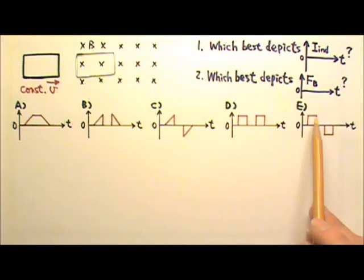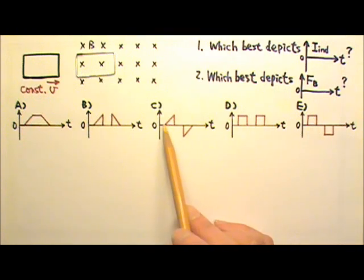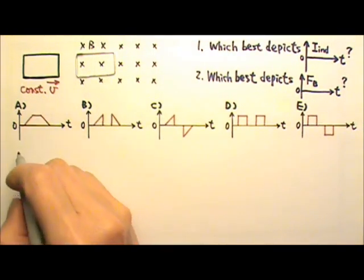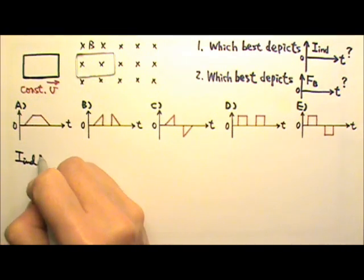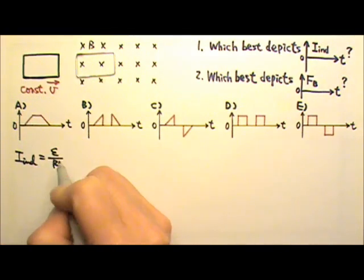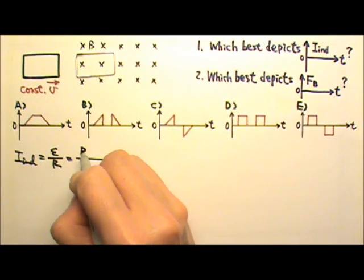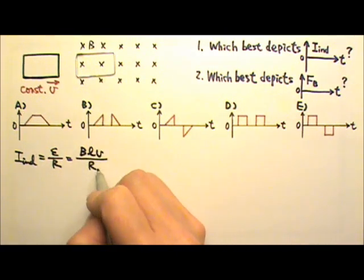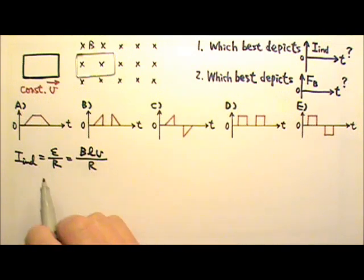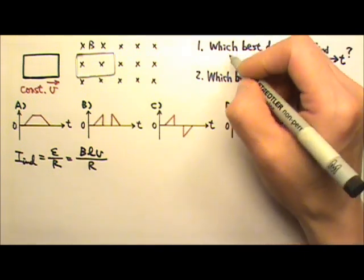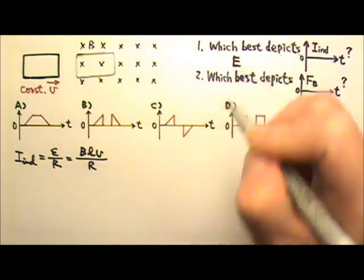The answer is E because while the loop is entering, the current is constant — it does not increase. The induced current equals EMF divided by R, and in this case the induced EMF is BLV. B, L, and V are all constants, so the induced current is a constant value whenever there is induced current. So the answer is E.